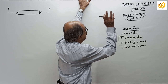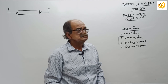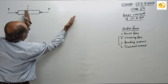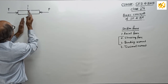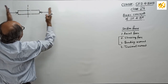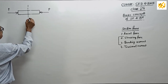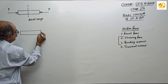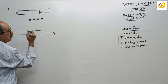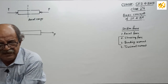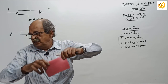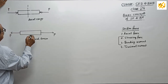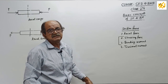Our main concern here is how to find SF and BM and how to draw SFD and BMD. If I take a cross-section, the force P acts from one side and P acts from the other side — this cross-section is subjected to axial compression. Same way, if forces pull outward on both sides, it creates axial tension for the cross-section.